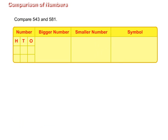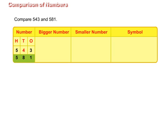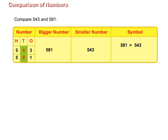Take one more example. Compare 543 and 581. Both have three digits. If we compare the digits in their hundreds place, both have five in the hundreds place. Now compare the digits in their tens place. 543 has four in the tens place and 581 has eight in the tens place. Since 4 is less than 8, therefore 581 is greater than 543, or 543 is less than 581.